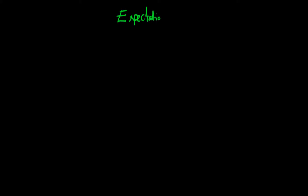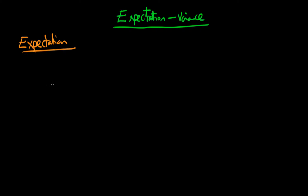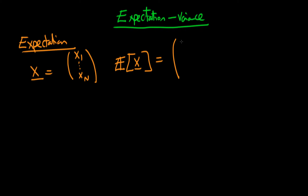In this video I'm going to talk about what it means to take the expectation and the variance of a vector, because now we're generalizing our result from that of a scalar to that of a vector. If we think first of all about what it means to take the expectation of some random vector, we can write out generally our vector — let's call it x — as being composed of components x1, x2, all the way through to xn. The expectation of that random vector x is the vector composed of the expectations of each of the elements of x, so the top element is the expectation of x1, the second element is the expectation of x2, and we continue down all the way to the expectation of xn.